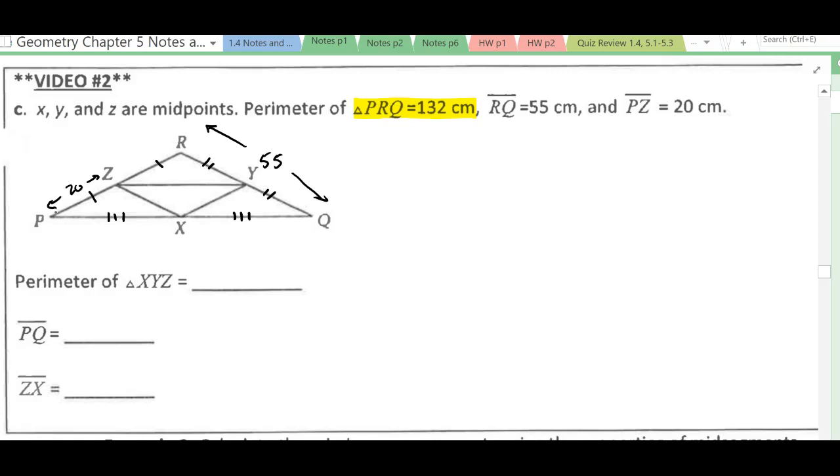So we want to find the perimeter of triangle XYZ. Let's go ahead and find some other stuff here first. So I've got that ZR, that's also going to be 20.